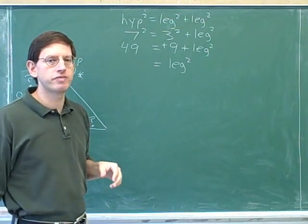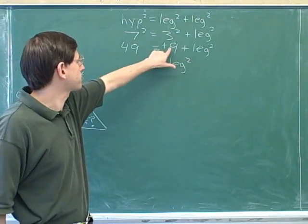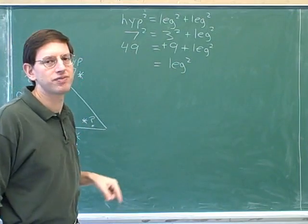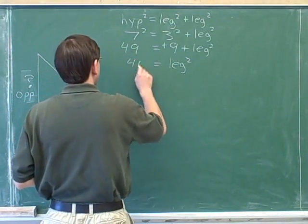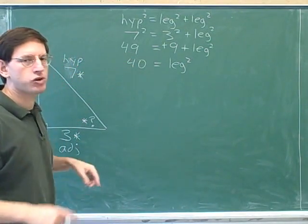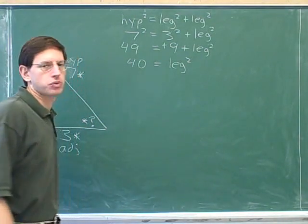But remember the golden rule of algebra. Anything we do to the right-hand side, we also have to do to the left-hand side. If we're going to subtract 9 from the right-hand side, we have to subtract 9 from the left-hand side as well. What's 49 minus 9? It's 40. Please notice we're not adding 9 to the left-hand side. We're subtracting 9, doing the opposite. So we get 40 equals the leg squared.